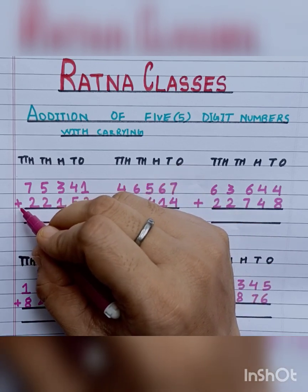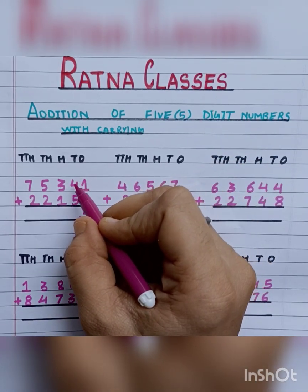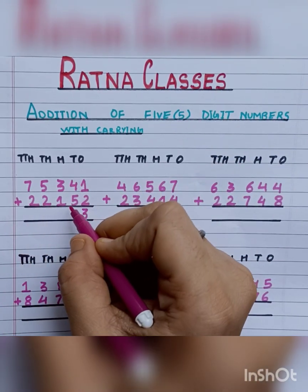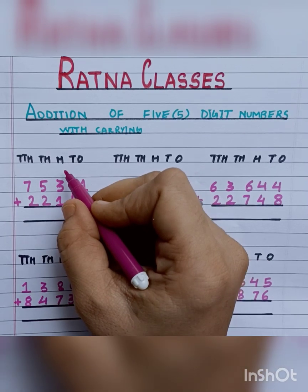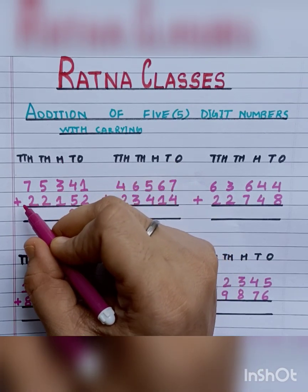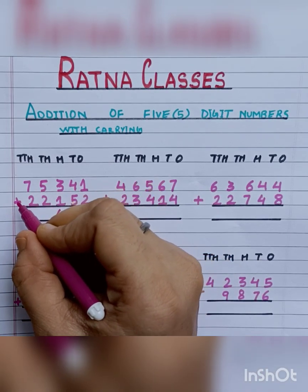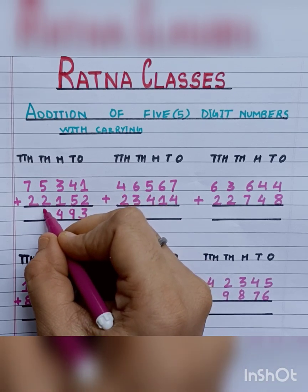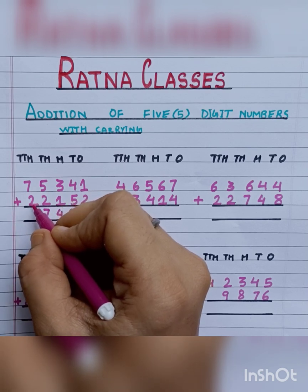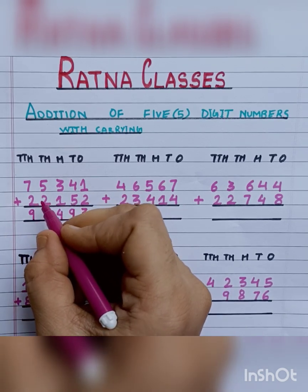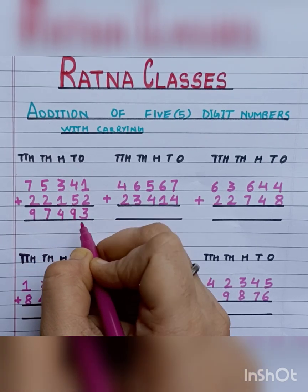That is 1 plus 2, which is 3. Now 4 plus 5 is 9. Our next number is on the hundreds place — 3 plus 1 is 4. Then 5 plus 2 is 7. And 7 plus 2 is 9. So our answer is 97,493.